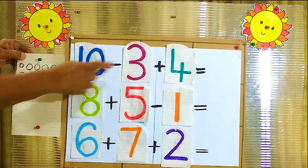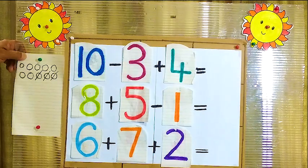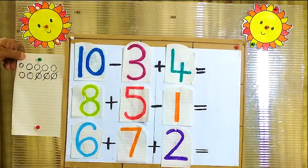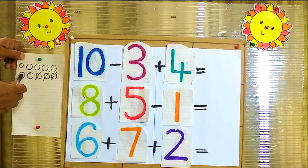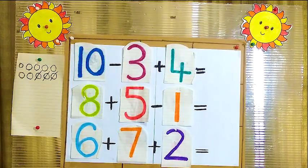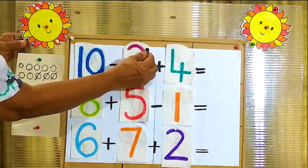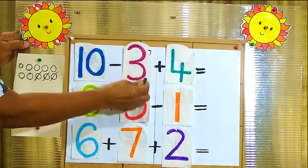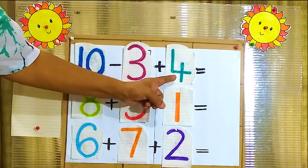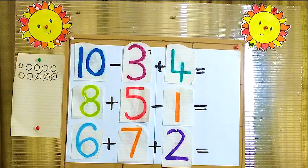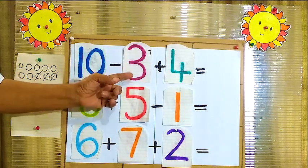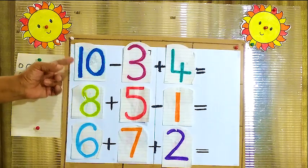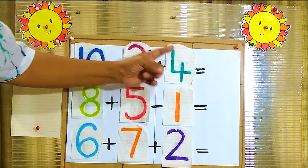How many balls we have to take out? 3. Then how many remaining here? 1, 2, 3, 4, 5, 6, 7. The remaining number is 7. Right here 7. Now again there's another one — we have to add 4 to this 7. First we have to take out 3 from 10, and to that answer we have to add 4.